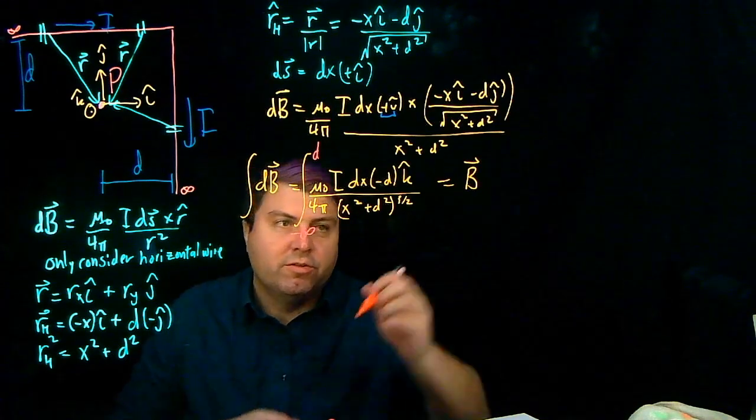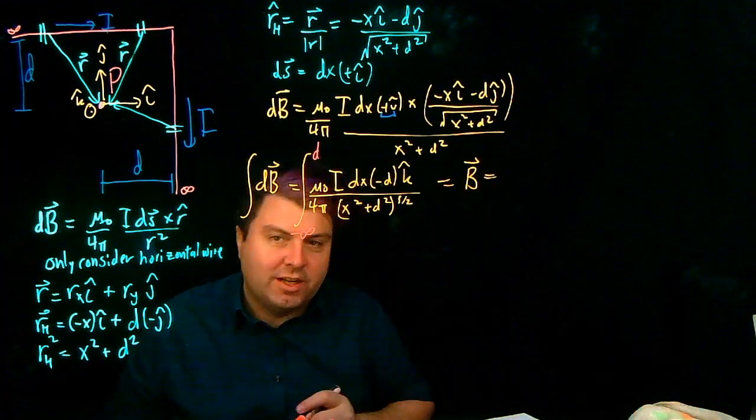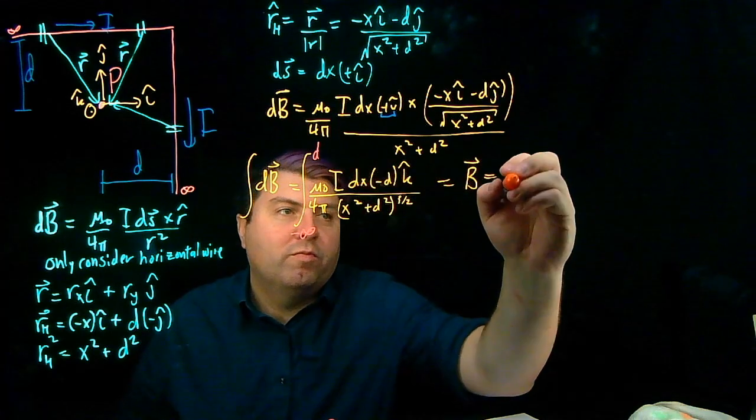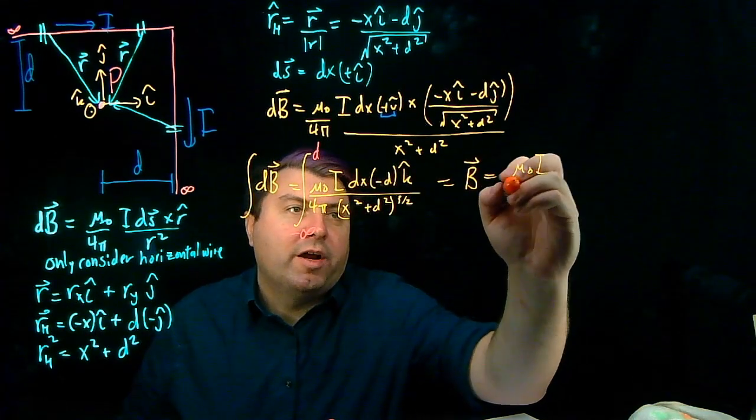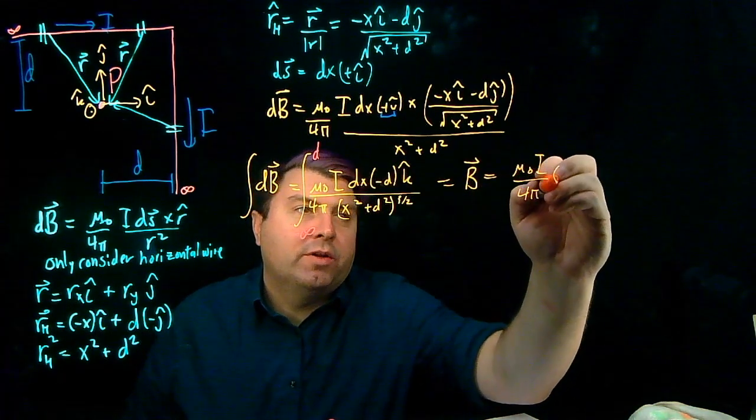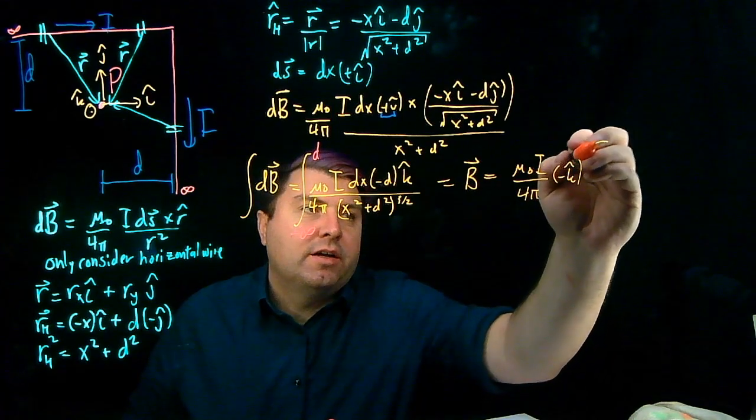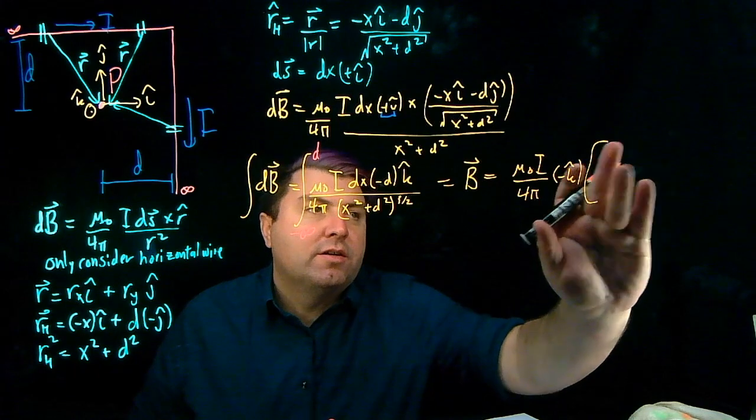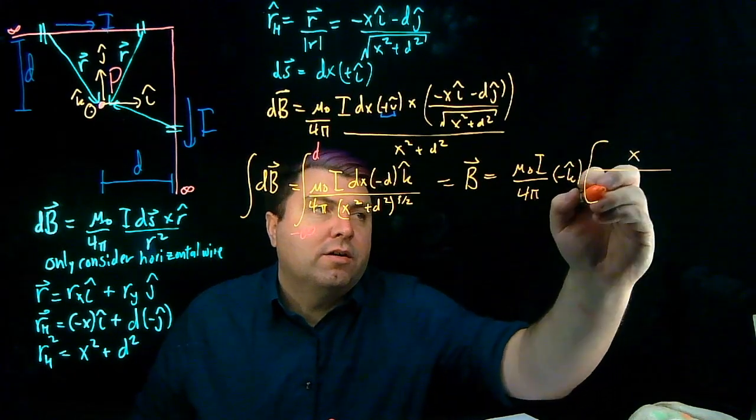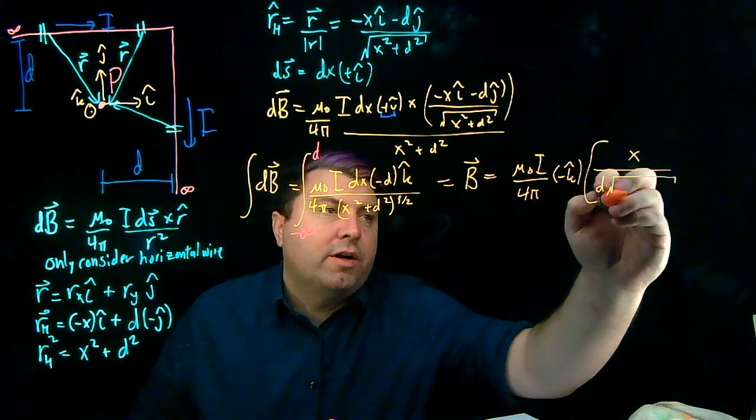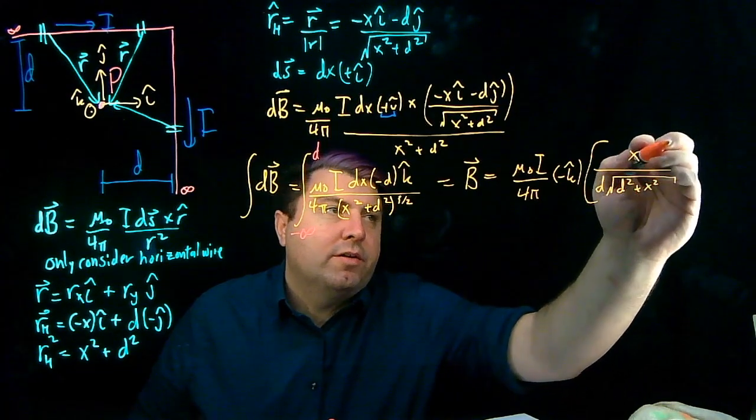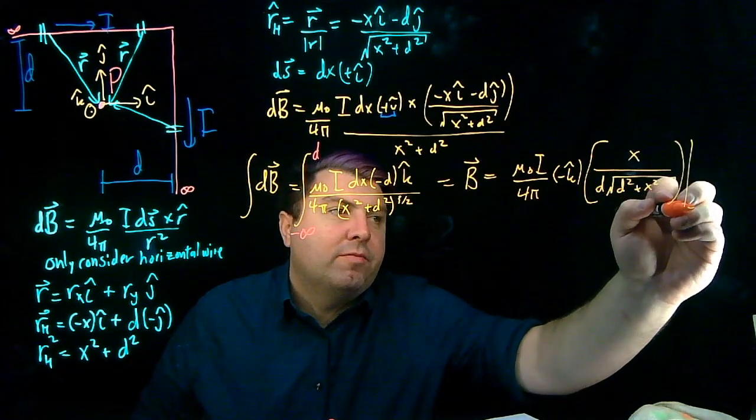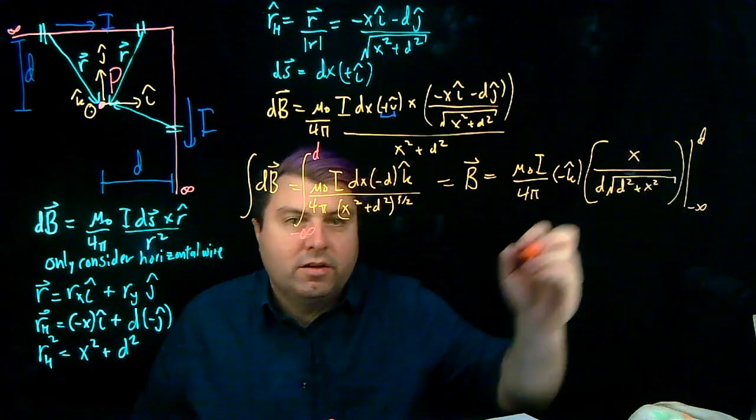So we are going to, nicely enough, just look this up in a table. We can pull out mu naught i over 4 pi. We can pull out the negative k hat. And what we are left with is x over d square root of d squared plus x squared. And then we have to evaluate it from negative infinity to d.